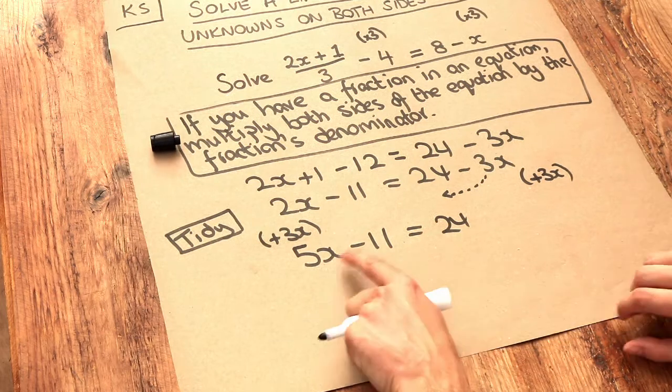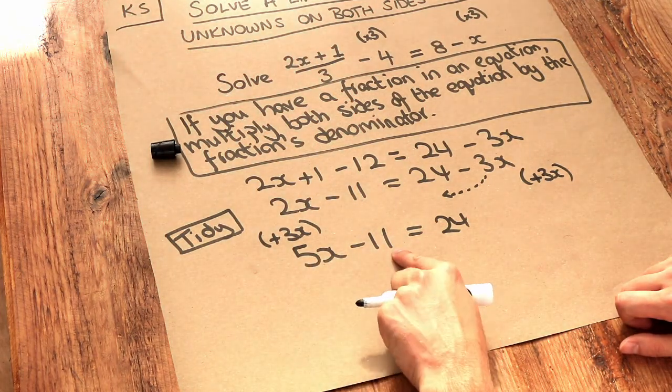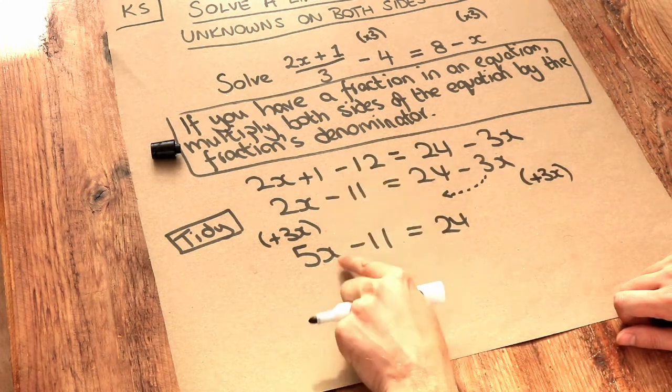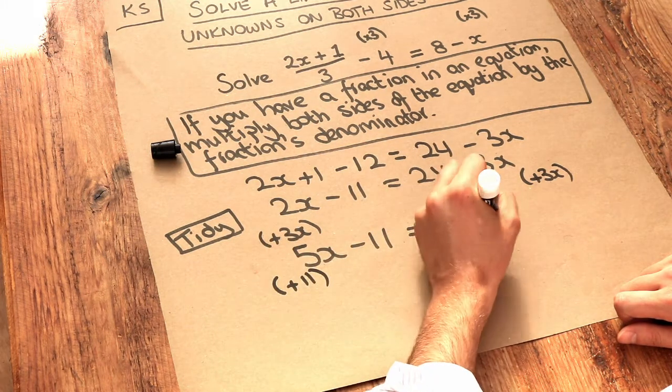At this stage it gets simpler. x has been multiplied by 5, then we subtracted 11. So remember, we undo the last thing that happened to x. So we undo the minus 11 by adding 11 to both sides.